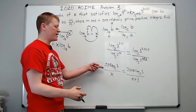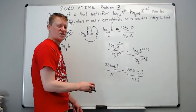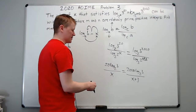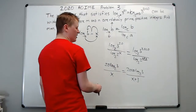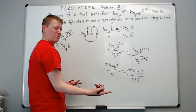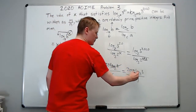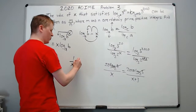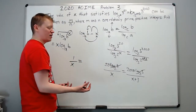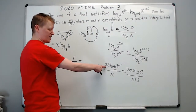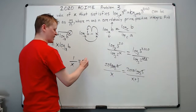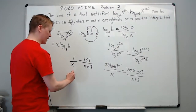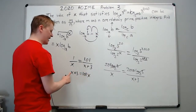After dividing both sides by log base 2 of 3 and by 20, we get 1/x equals 101/(x+3). There are many ways to finish from here. Cross-multiplying: x + 3 = 101x. Subtracting gives 100x = 3, so x = 3/100.